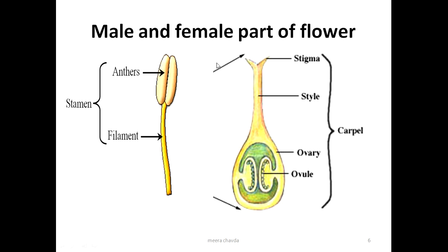Looking at the male part: the entire structure is the stamen, the top part is the anther, and the bottom stalk is the filament. In the female part, the top is the stigma, the middle part connecting the stigma and the ovary is the style — a tube-like structure — and the lower swollen part is the ovary, which contains small ovules inside it. This entire structure is called the carpel or pistil.